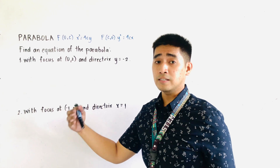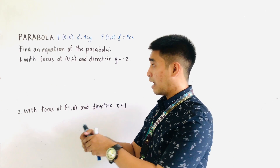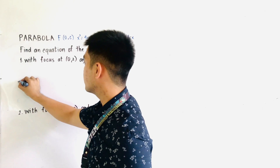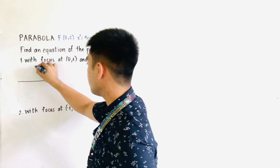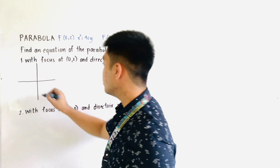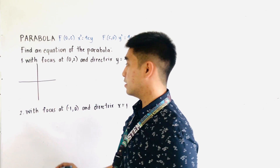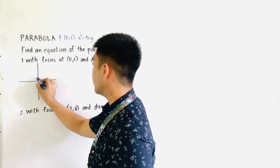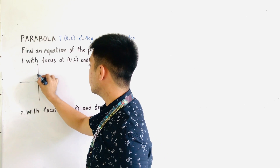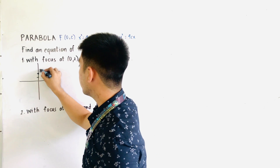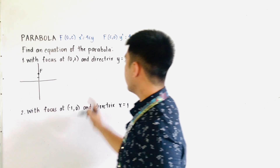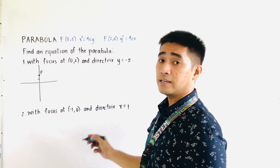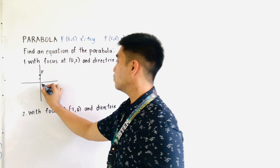Let us first graph the focus located at (0, 2). So the focus is at (0, 2), therefore the y coordinate is 2. This is our focus. And the directrix is located at y = negative 2.